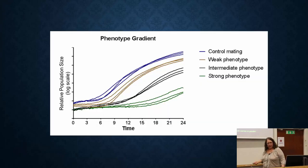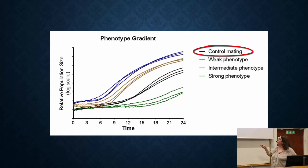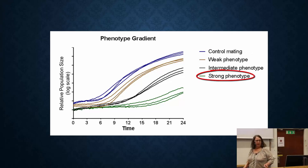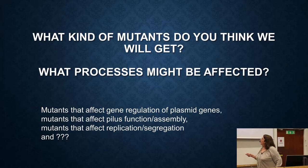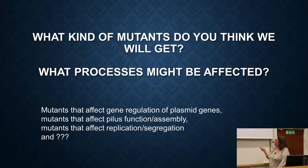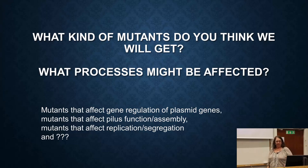Using this system, we found a number of mutants that don't conjugate well. The control that conjugates well is shown in blue, and in green, for example, is something that conjugates very poorly. We're in the middle of figuring out all these mutants — we think it's likely we find mutants that affect gene expression on the conjugated plasmid, those with a problem making the pilus, or those that affect replication or transfer of the actual DNA.